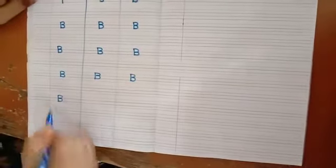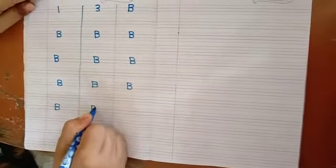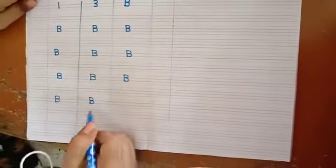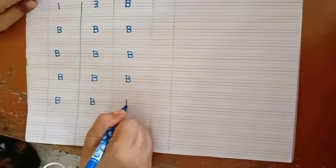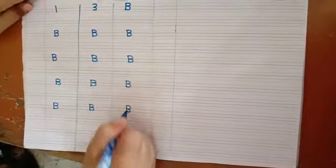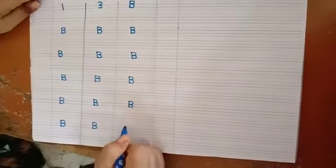We write standing line, two small curves, it makes B. Standing line, two small curves, it makes B. Standing line, small curves, it makes B.